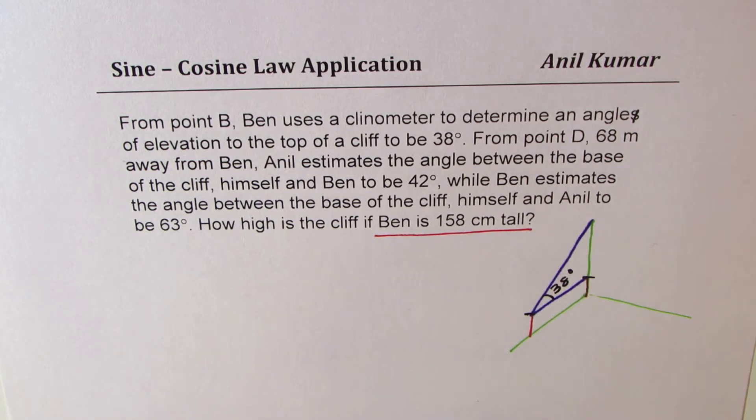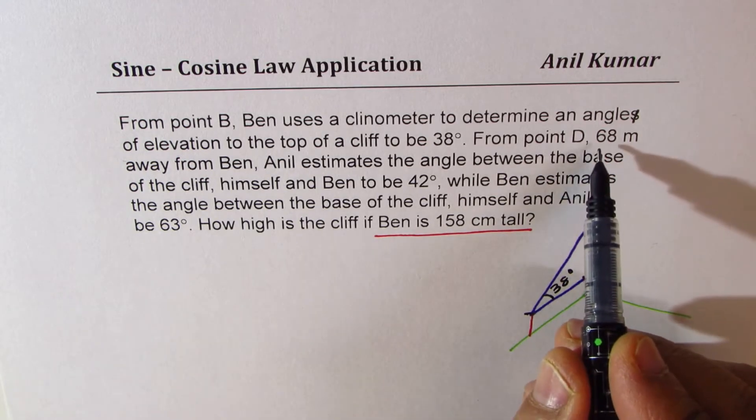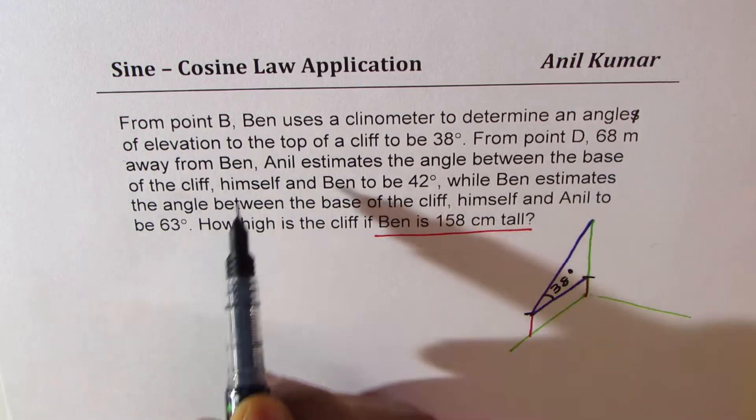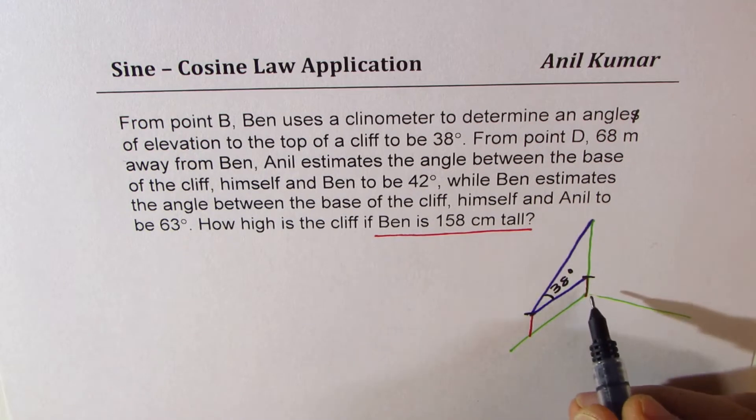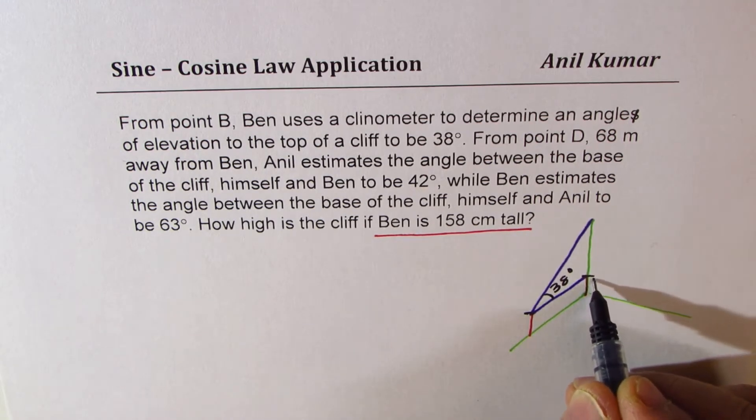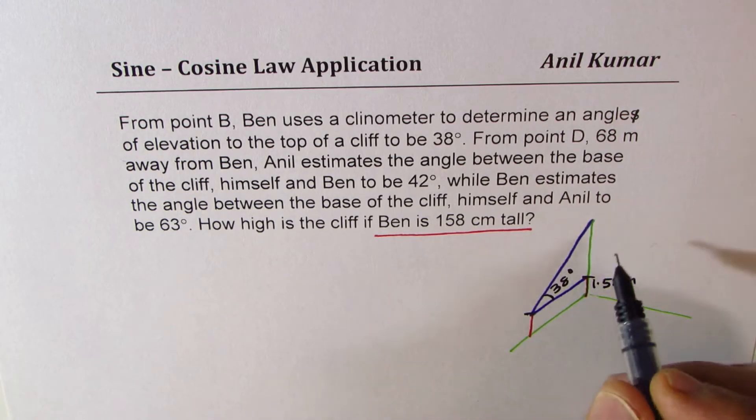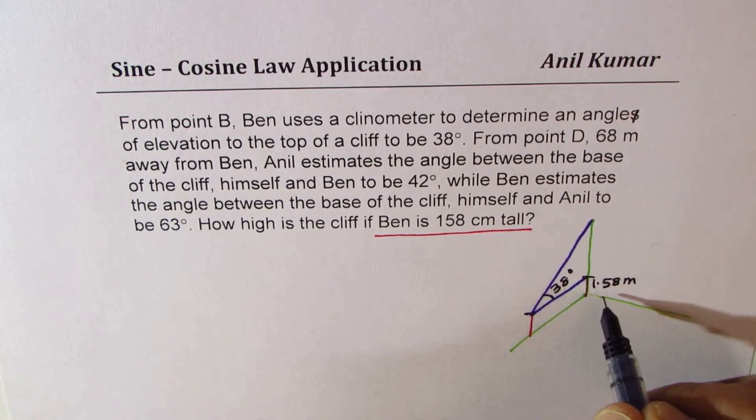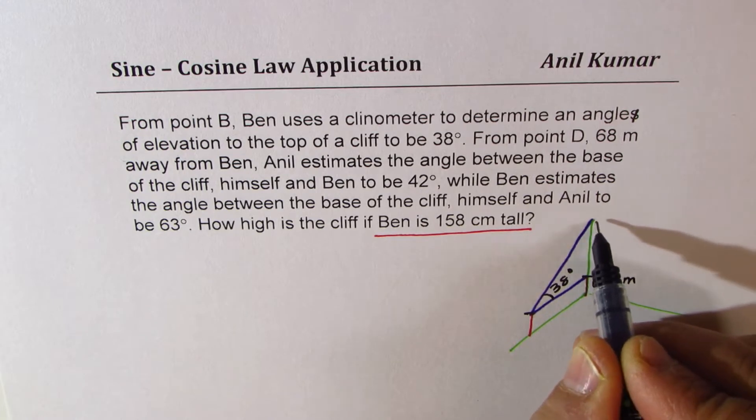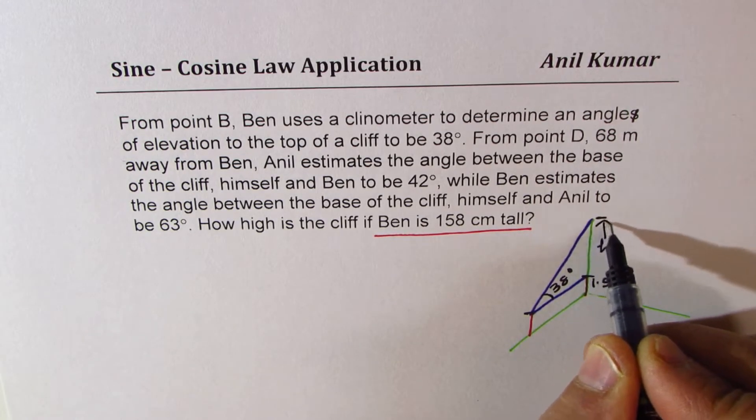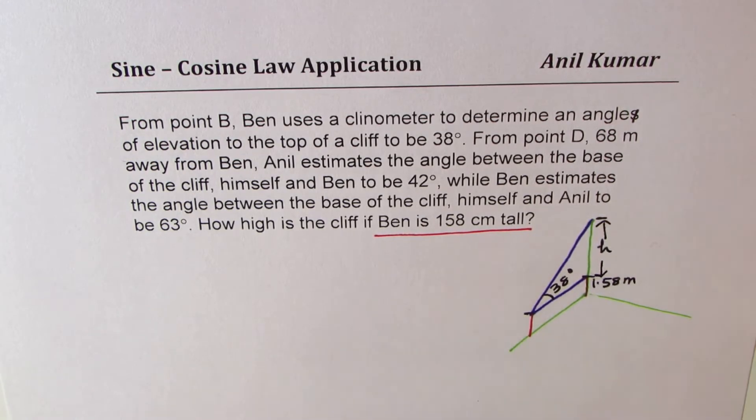Normally, we are going to use meters as the unit, as we are given 68 meters distance between Anil and Ben. So let's write it down in meters, which is 1.58 meters. That's the height of Ben, and let's say 1.58 plus small h is the height of the cliff.